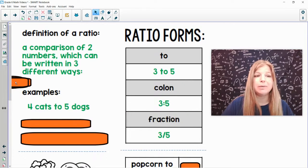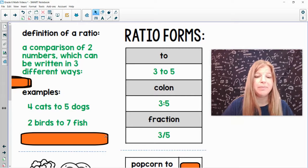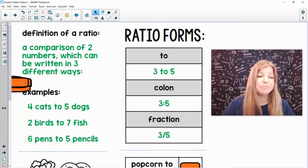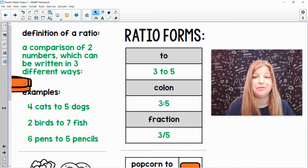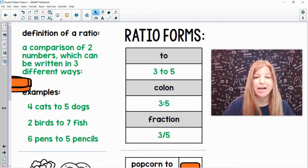So for example, we can compare four cats to five dogs, and we can call that four to five. We can compare two fish to seven birds and call that two to seven. We can talk about six pens to five pencils, and that would be six to five. And again, we can use the word 'to', we can use the colon or the fraction.